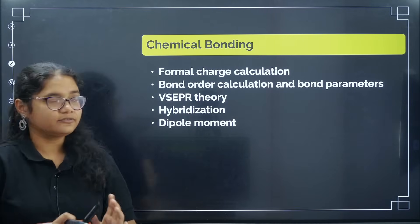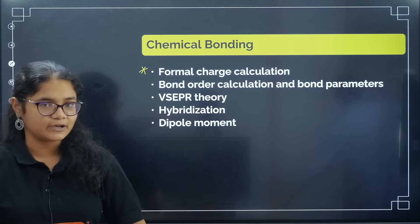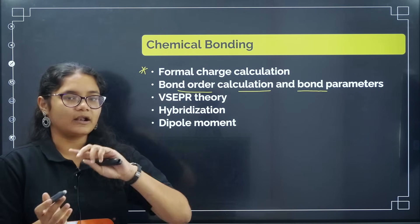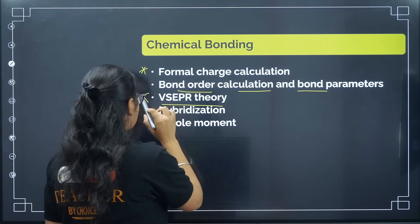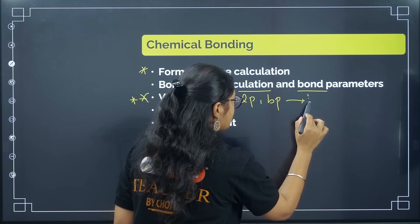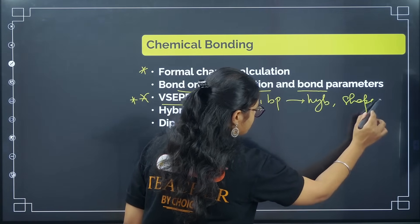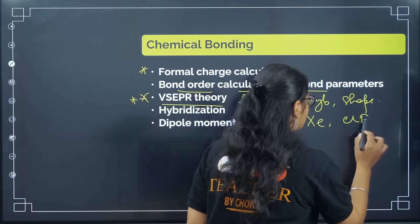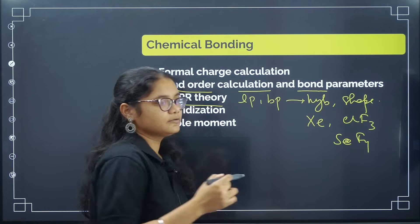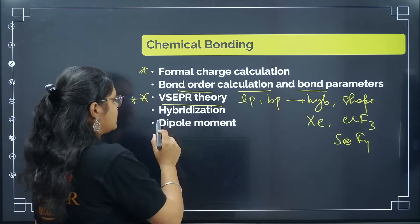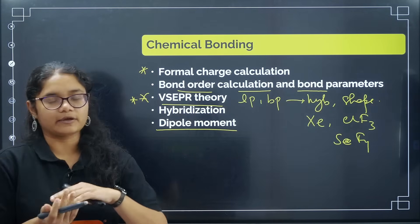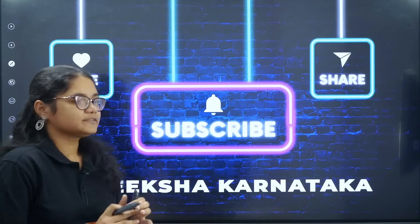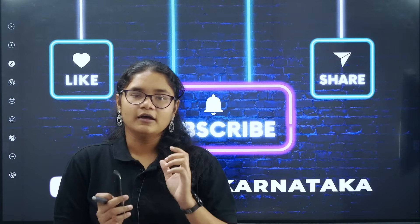The last one is chemical bonding from inorganic chemistry. You should do one question from formal charge calculation, so just revise the formula once again. Then we have bond order calculation and bond parameters - how to calculate the bond order and how to connect it with the bond length. VSEPR theory is very, very important. Just know how to calculate the lone pairs, bond pairs, then how to find the hybridization and the shape or geometry of the molecule. From here, some questions will definitely be asked. You can prepare xenon compounds - these are important - and then ClF3, SF4. These are the compounds whose structures should be remembered. Now next is your dipole moment - how to calculate the dipole moment, questions like where net dipole moment will be zero. There are some numericals or examples of dipole moment you can practice.